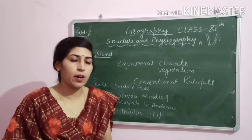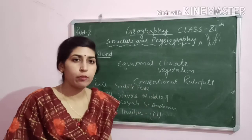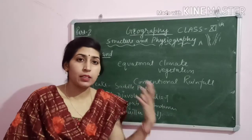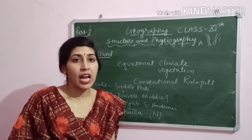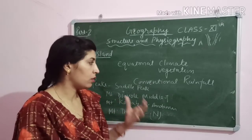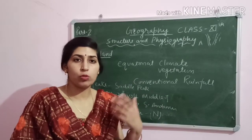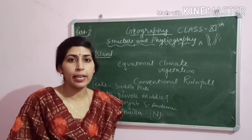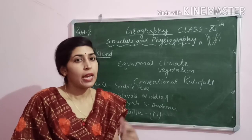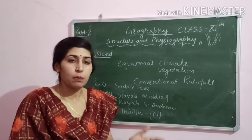Because Andaman and Nicobar is near the equator, the climate is equatorial — characterized by high temperature and humidity. There is heavy rainfall here due to conventional rainfall: strong sunlight causes high evaporation, followed by condensation and rain. This makes the region very warm and wet.